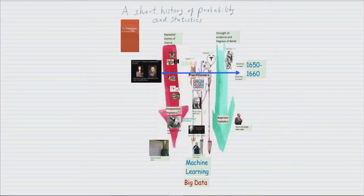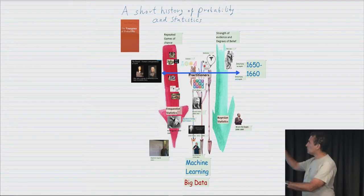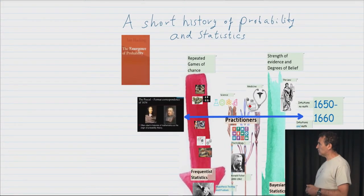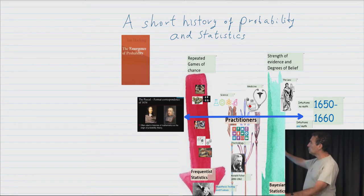So let's look at this poster. This is a short history of probability and statistics, and much of it is based on this book by Ian Hacking, The Emergence of Probability. If you're interested in more, you can go read this book. It's an excellent book.